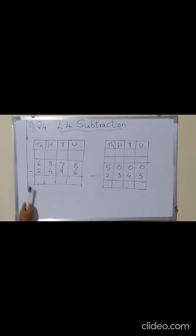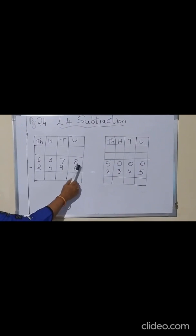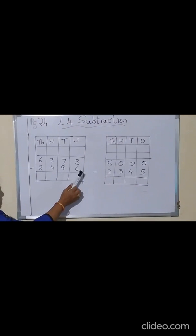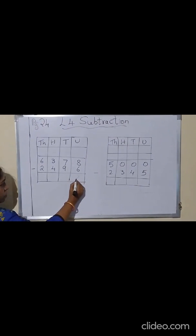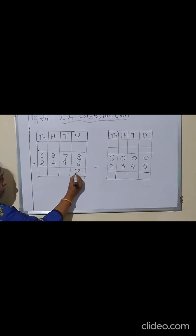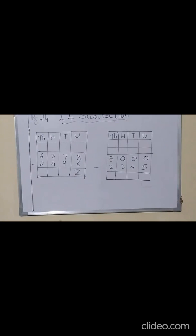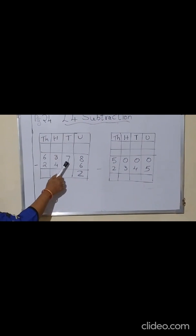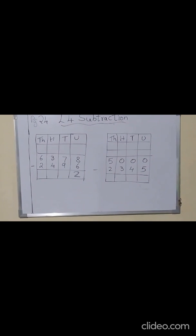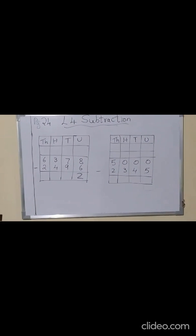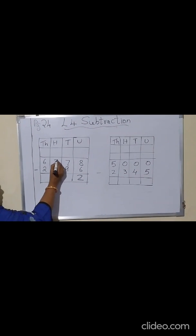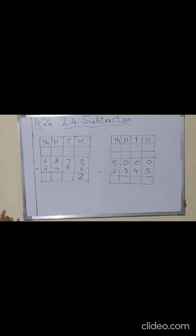From here you have to start subtracting. Now let's do the first one: 8 minus 6. Now, 8 minus 6 — that means from 8 if we remove 6, the answer will be 2. Now here in the tens place you have 7 and 9. From 7 you have to minus 9. Now if you see, 7 is a small number and 9 is a greater number. We cannot cut or remove 9 from 7. So for that you have to carry or borrow from the neighbor — we have to borrow one number.